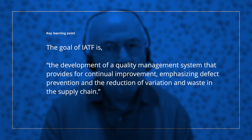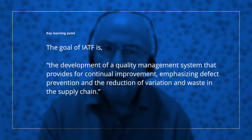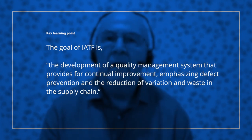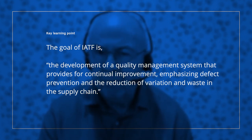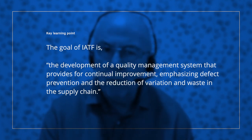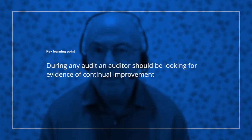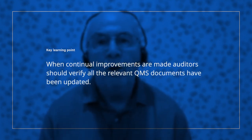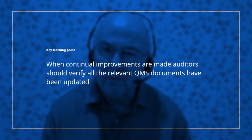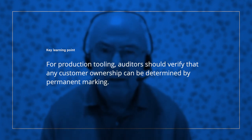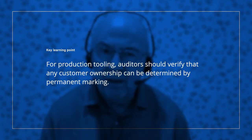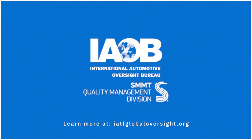So let's summarise the key learning points. The goal of IATF 16949 is stated as the development of a quality management system that provides for continual improvement, emphasising defect prevention and the reduction of variation and waste in the supply chain. During any audit, auditors should be looking for evidence of continual improvement. When continual improvements are made, auditors should verify that all relevant quality management system documentation has been updated. Finally, for production tooling, auditors should verify that any customer ownership can be determined by some form of permanent marking.